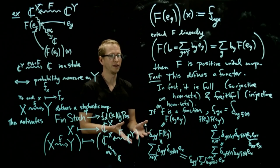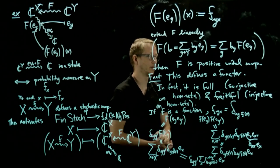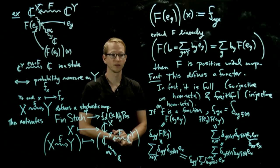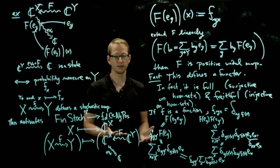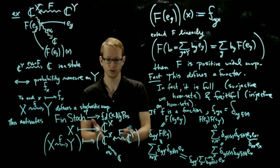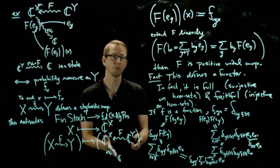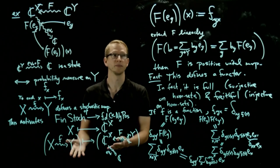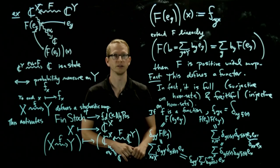This tells us that F is actually a star homomorphism — that capital F is a star homomorphism whenever f is a function. It turns out — though I won't prove this part — that if we start with a star homomorphism, you can prove that the corresponding stochastic map is always a function, following from a similar faithfulness argument sketched out earlier.